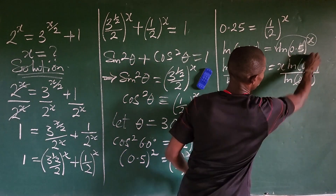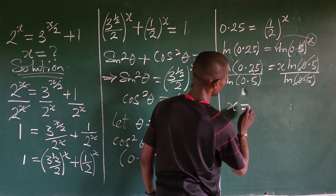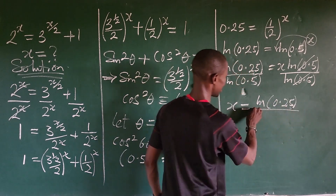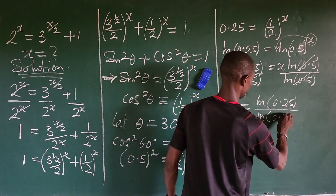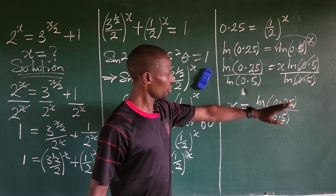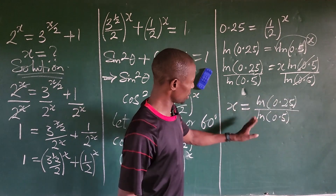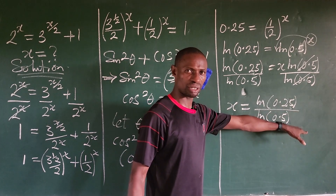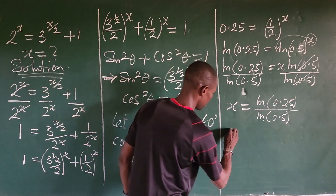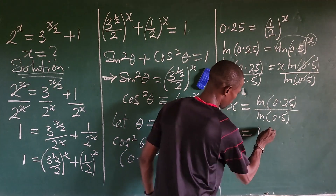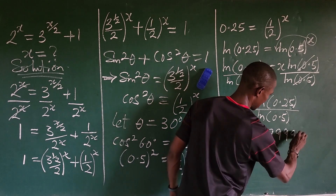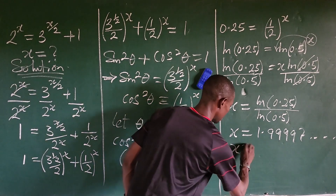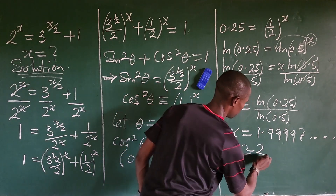So we have x equals ln(0.25) over ln(0.5). If you input this into your calculator, ln(0.25) gives approximately −1.386 and ln(0.5) gives approximately −0.693, so the manipulation gives x equal to approximately 1.99997 — which we round to x approximately equal to 2.